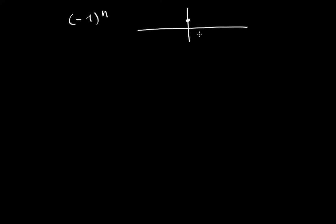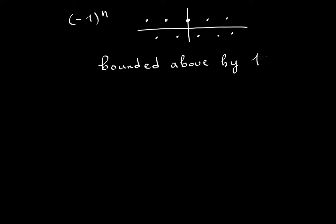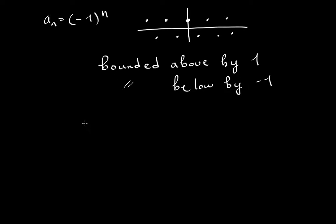The sequence (-1)^n looks like: one, then negative one, one, negative one, one, negative one, and you keep going. Clearly this is bouncing around between one and negative one. This is bounded above by one — we call that the supremum, the least upper bound. And it is also bounded below by negative one, which is the infimum, the greatest lower bound. So a sub n is bounded.